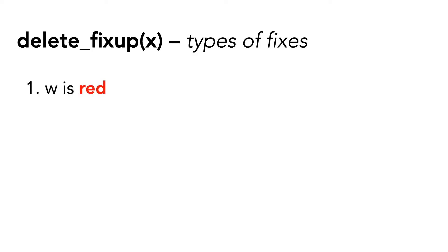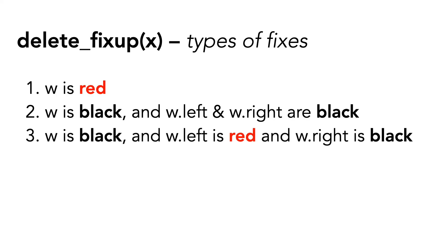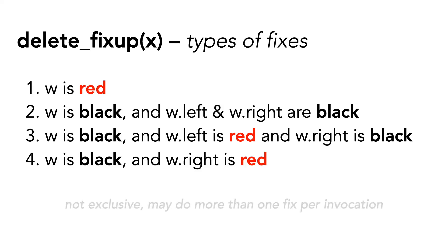First, when w, x's sibling, is red. Second, when w is black and w's left and right children are black. Third, when w is black, w.left is red, and w.right is black. And finally, when w is black and w.right is red. It's worth noting that these are not exclusive fixes, as we may do more than one fix per invocation.